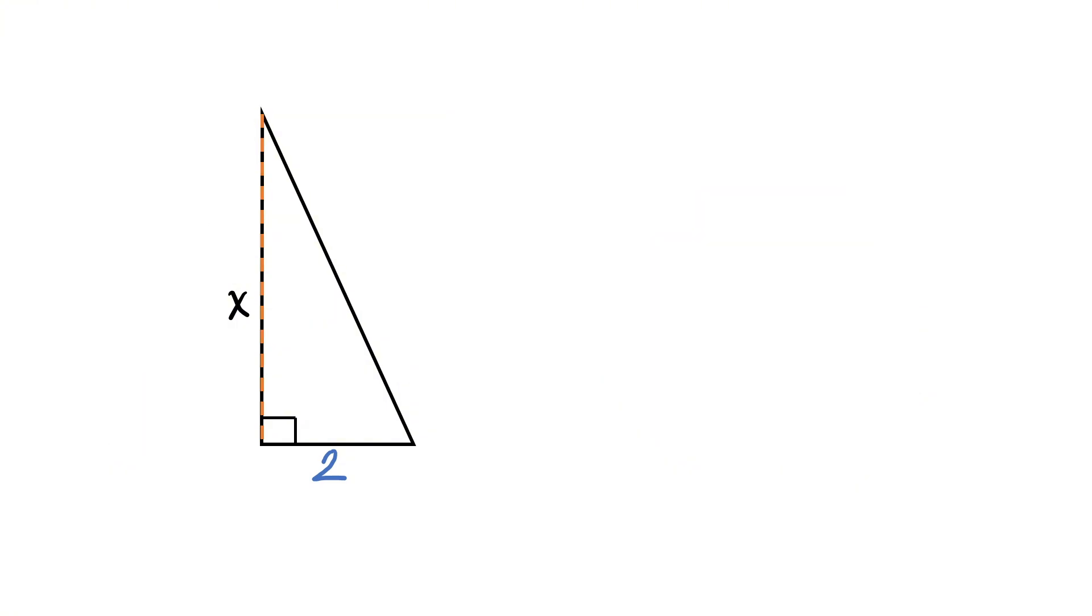First, consider this right triangle. Let this hypotenuse be of length a. So, we get a squared equals x squared plus 2 squared or 4. So, a equals square root of this.